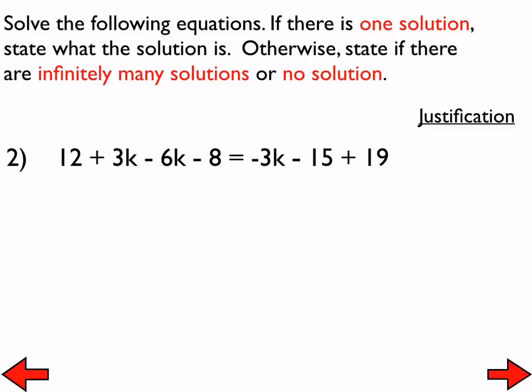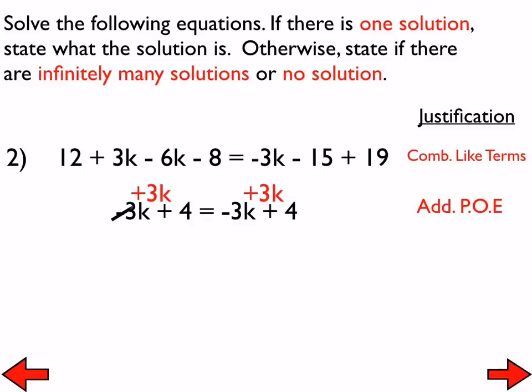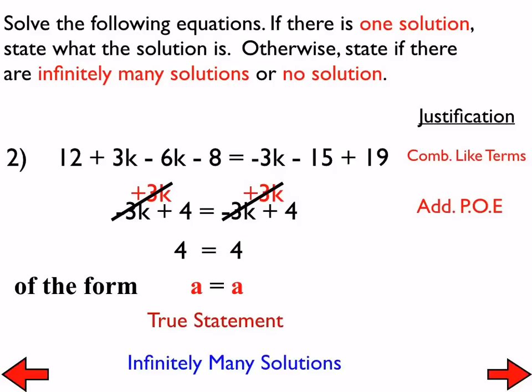Now do numbers two and three with your shoulder partner. For number two, combining like terms leaves one expression equal to itself — at that point you should recognize it's infinitely many solutions. If you continued and added 3K to both sides using the addition property of equality, you'd end up with 4 equals 4, which is the form a equals a — a true statement — confirming infinitely many solutions. There are an infinite number of values you could substitute in for K and get a true statement.